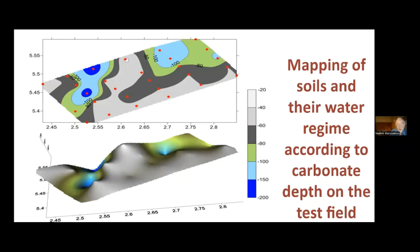The soil map of this field was made using profile description, drilling wells to the carbonate horizon with GPS positioning, and is shown here in 2D and 3D images.